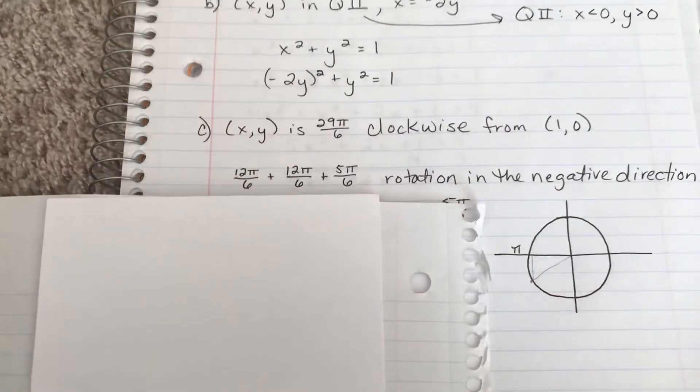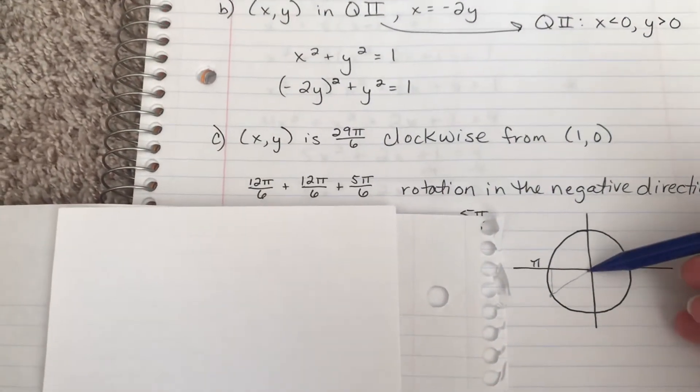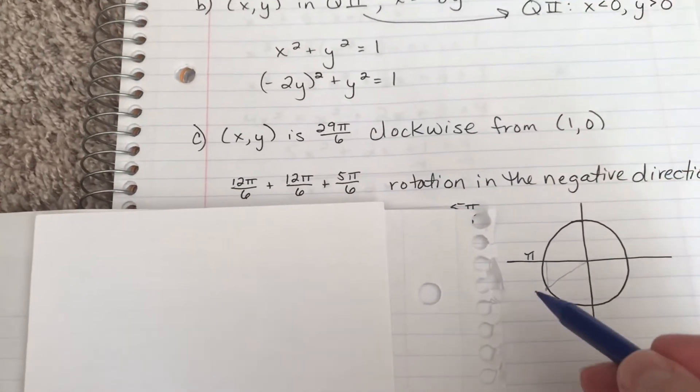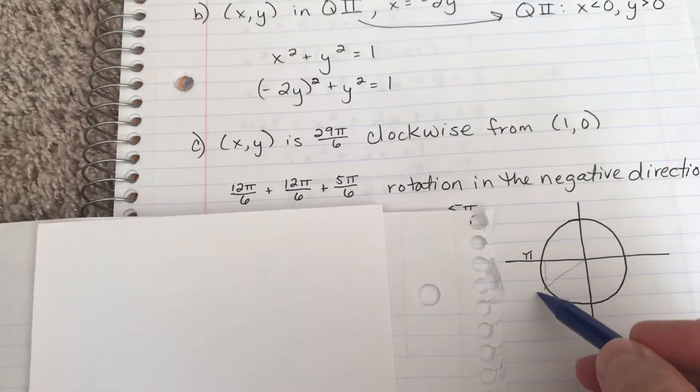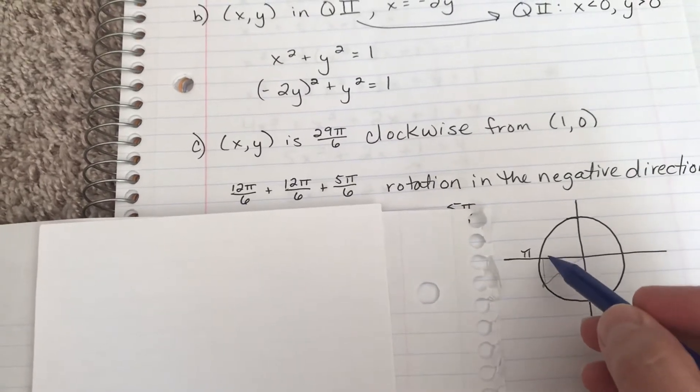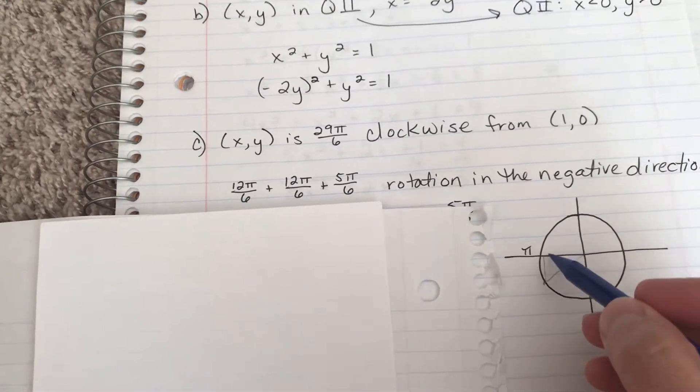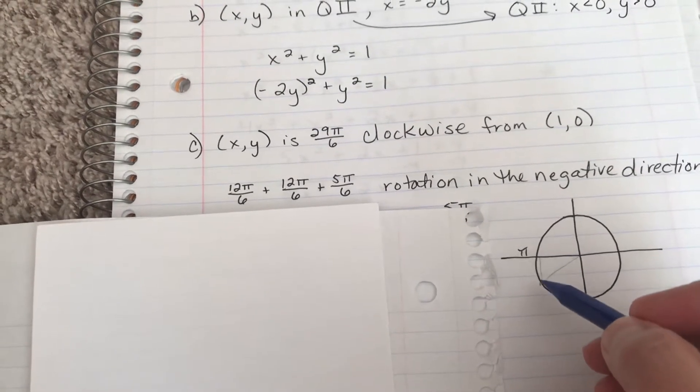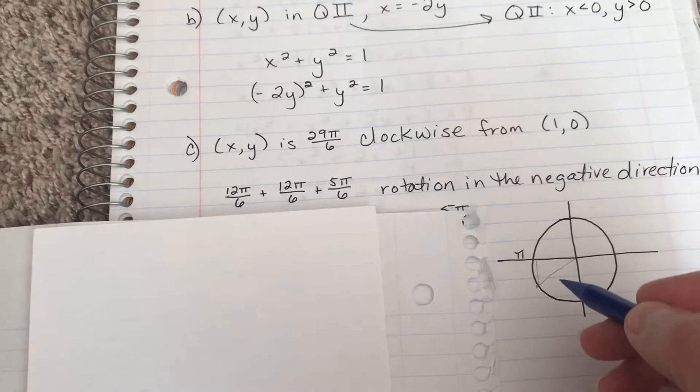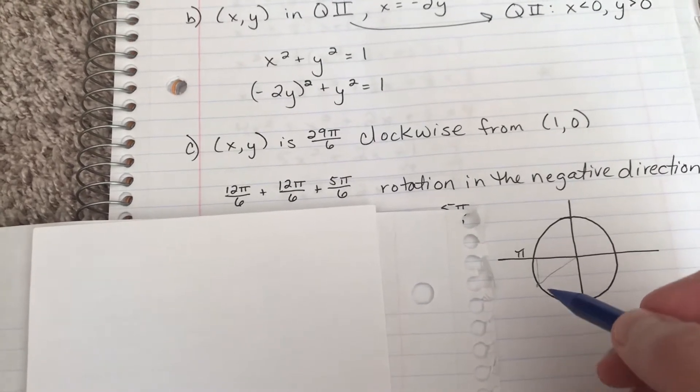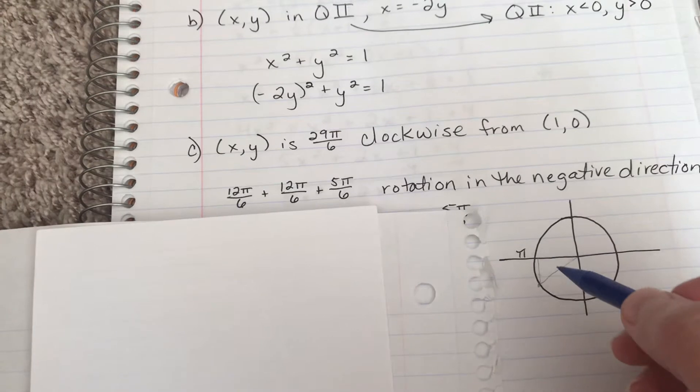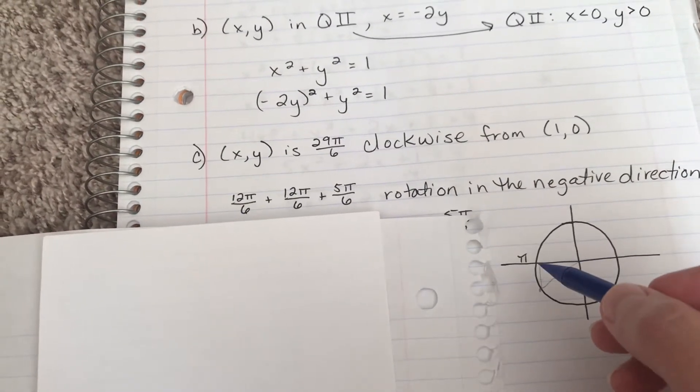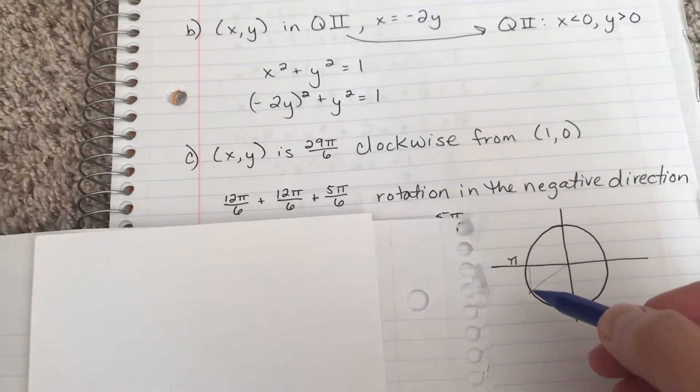If I think about where this is, this is one of those special triangle situations. This one is going to correspond to a 30-60-90 triangle that we could fit right in there. The x-value here is going to be the medium side and the y-value is going to be the short side of this 30-60-90 triangle, which means the x-value is going to be negative √3/2 and the y-value is negative 1/2.